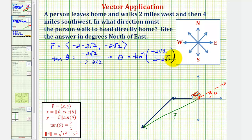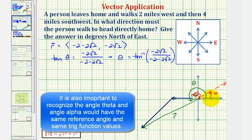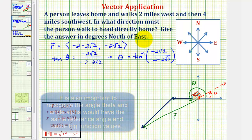Remember, our angle theta is in the third quadrant. But the range of inverse tangent is the open interval from negative 90 degrees to positive 90 degrees. Since tangent theta is positive in both the first and third quadrants, this inverse tangent function value should return our angle alpha — the number of degrees north of east.